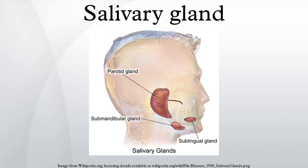Each acinus consists of a single layer of cuboidal epithelial cells surrounding a lumen, a central opening where the saliva is deposited after being produced by the secretory cells. The three forms of acini are classified in terms of the type of epithelial cell present and the secretory product being produced: serous, mucinous, and mucus.